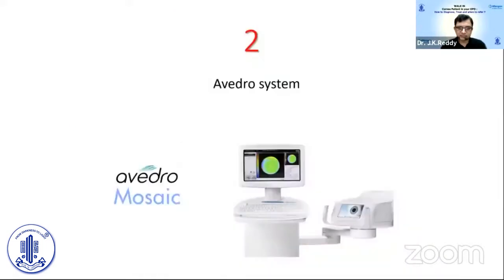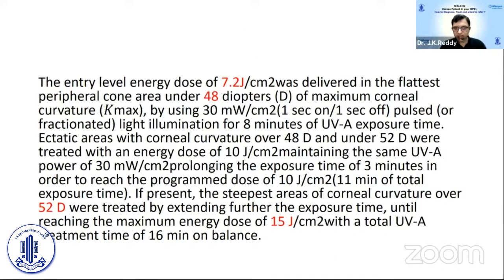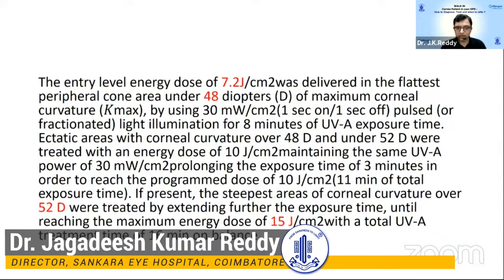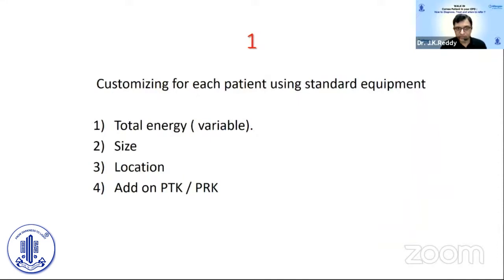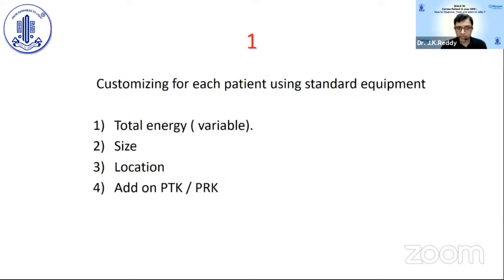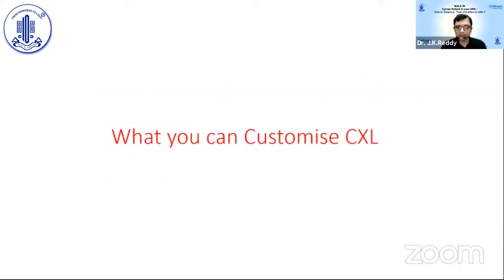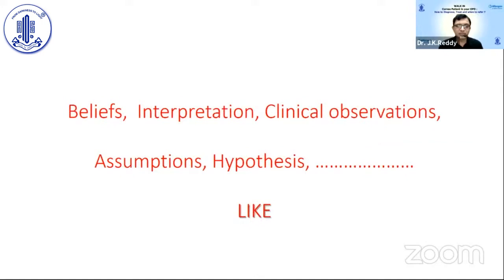As Dr. Maipal has already explained, there are two systems of customization. One is the Avedro system, where they change the fluence — giving the highest fluence of 7.2 joules for the steepest cornea at 48K and reducing the fluence for the peripheral cornea — thinking the strongest energy is necessary for the weakest, steepest area. The second system is the one I use, customizing for each patient using standard equipment. The Pixel system — Pixel 2 — is very expensive. Total energy is variable and can be changed depending on thickness and size; location can also be changed.